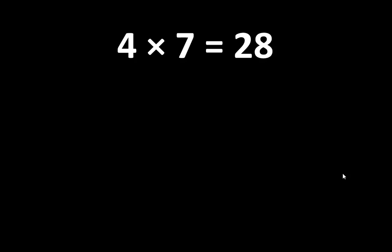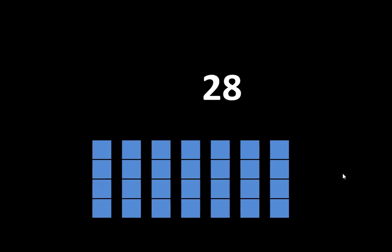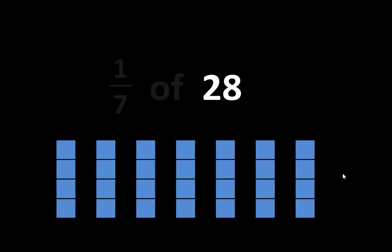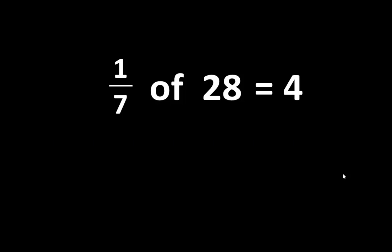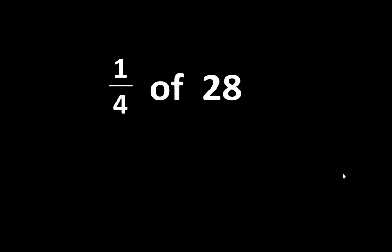4 x 7 is equal to 28, and there are many important ideas related to the number 28. If we divided 28 into 7 equal parts, each part would be 1/7 of 28, and 1/7 of 28 is equal to 4. And at the same time, if we divided 28 into 4 equal parts, each part would be 1/4 of 28, and 1/4 of 28 is equal to 7.